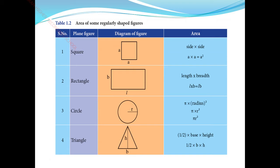For two-dimensional shapes, we deal with two dimensions. For a square, the area is side into side. For a rectangle, the area is length into breadth. For example, a hall versus a bedroom: the one with less space uses the formula length into breadth, written as L×B.